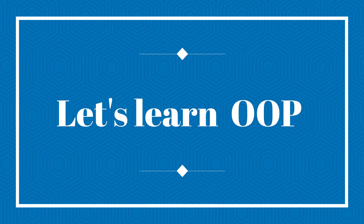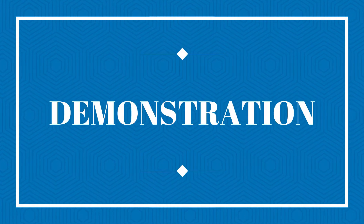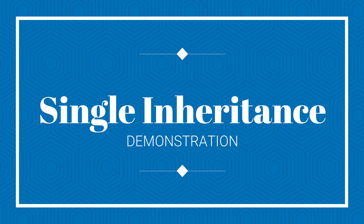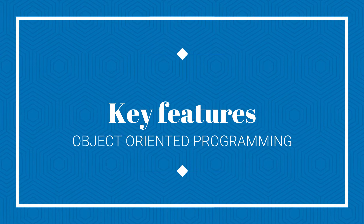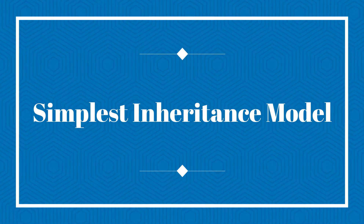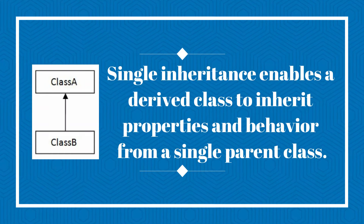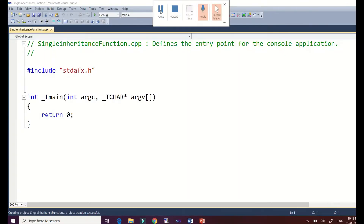Welcome back to the continuation of my demonstration for object-oriented programming. For this lesson I will be demonstrating a single inheritance implementation. This is one of the key features of object-oriented programming, and single inheritance is the simplest method of inheritance. Single inheritance enables a derived class to inherit the properties and behavior from a single parent class.